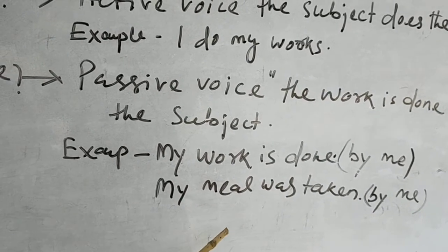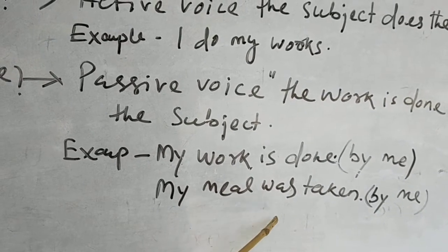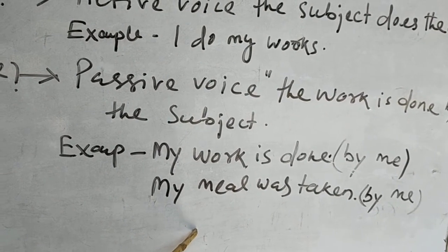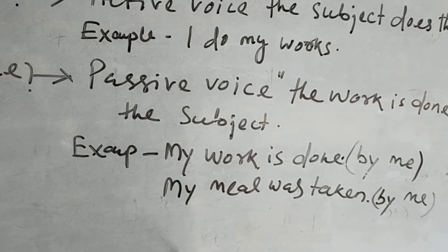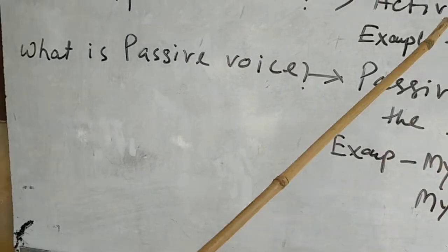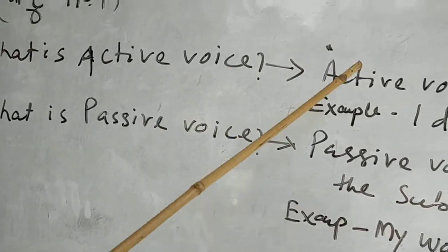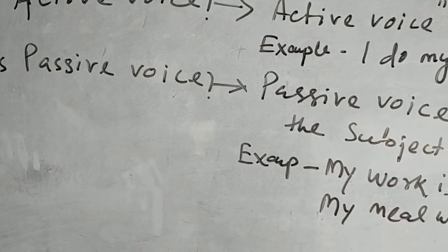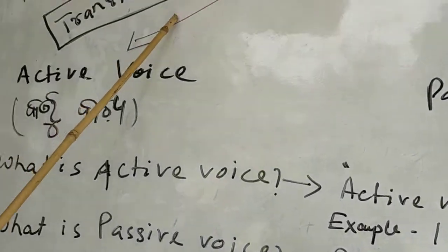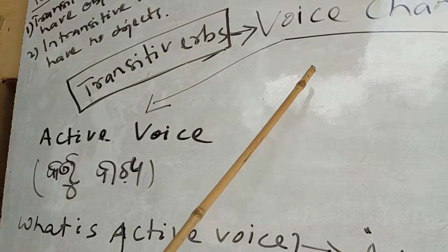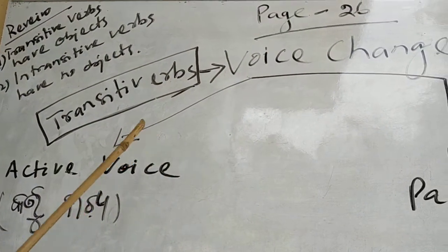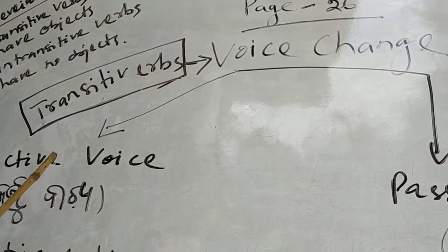Understood? So this is the active voice and passive voice. We have to know that only transitive verbs — the verbs that have objects — can have voice changes.